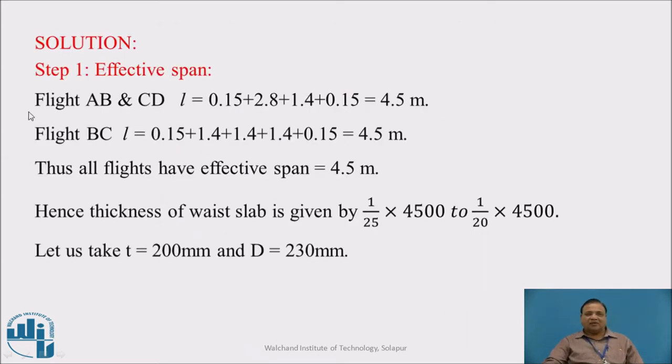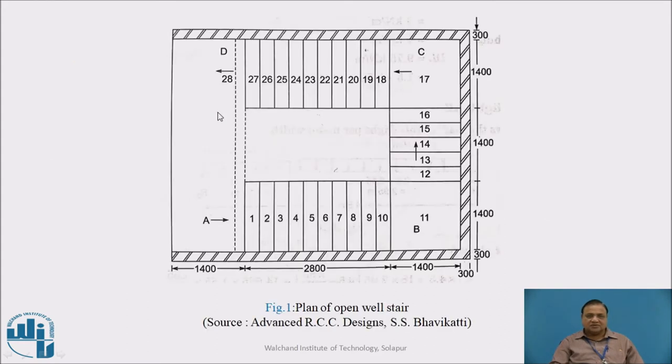Step 1: Effective span for AB and CD. Effective span L is given by 0.15 plus 2.8 going portion plus 1.4 plus 0.15. The 0.15 is the thickness of the wall or half the thickness of beam or wall. Here there is a beam and here there is a wall. Half the thickness of wall is taken as 300mm beam width and here wall is 300mm width. Half of that will be taken every time, then these treads, this is going portion and this is again landing portion.